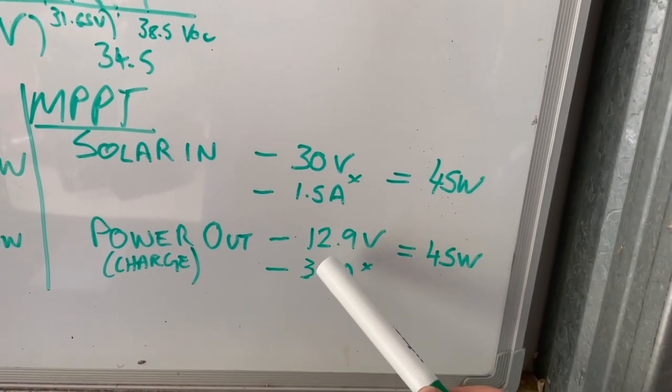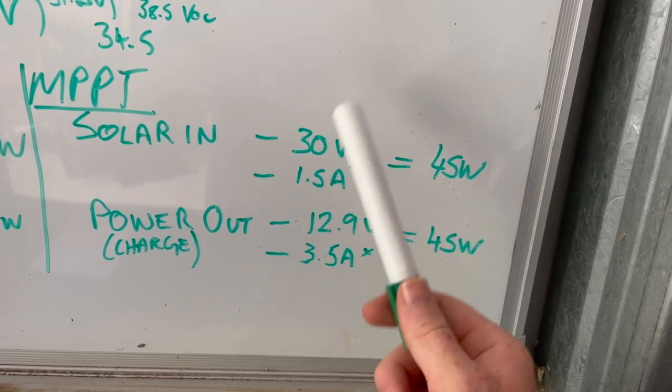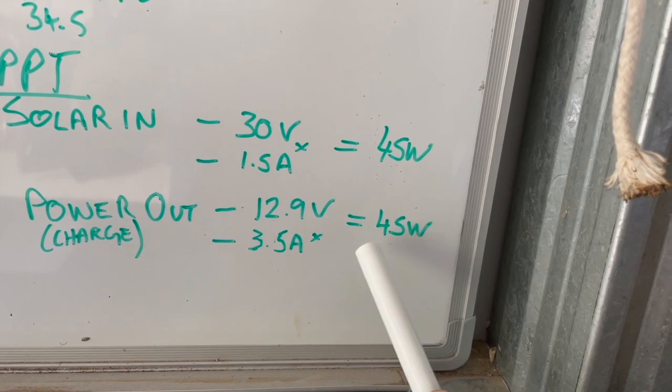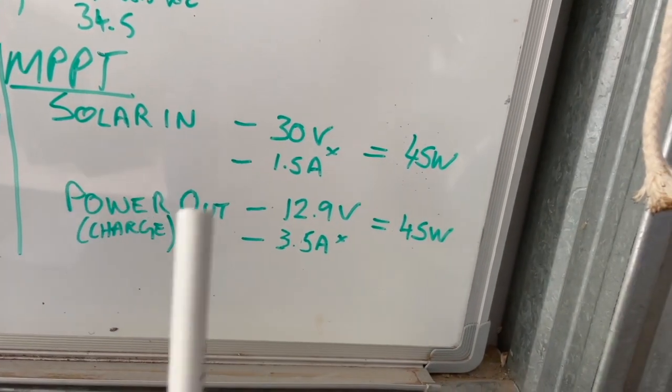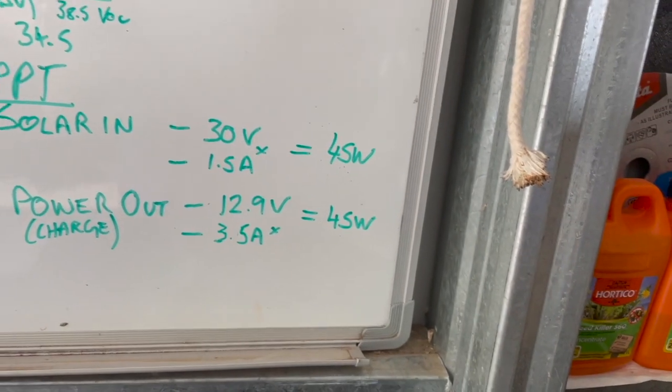step the voltage down to 12.9, that's what the battery needed to charge at. At the same time, it boosted the amps up to 3.5 to make up for that lost voltage, giving us 45 watts. So the MPPT can pretty much pull the maximum amount of power out of the panel and put it all towards charging the battery.